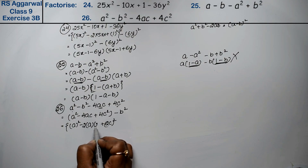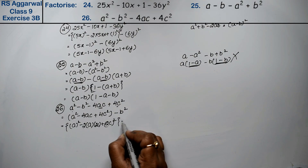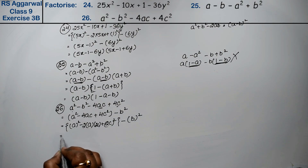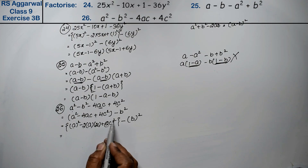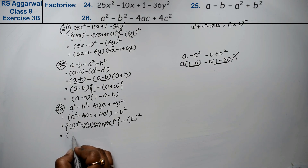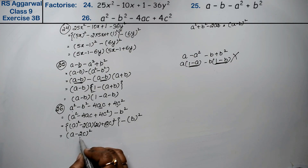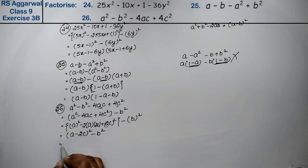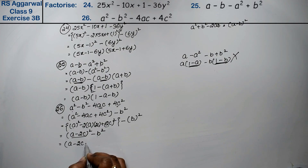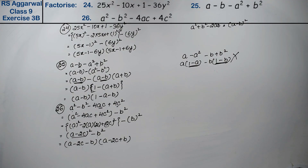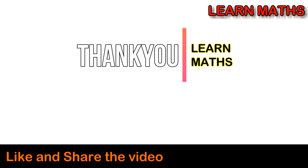We group the terms to recognize that a² - 4ac + 4c² is a perfect square equal to (a - 2c)². So the expression becomes (a - 2c)² minus b², which by the a² - b² formula gives (a - 2c + b)(a - 2c - b). That is the answer. If you understand this step-by-step solution, please subscribe to my channel on Maths and share it with your friends. Thank you.